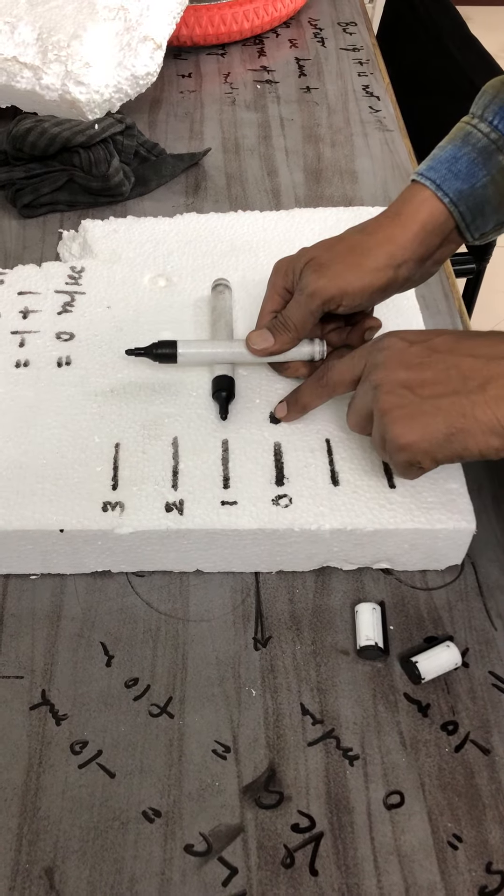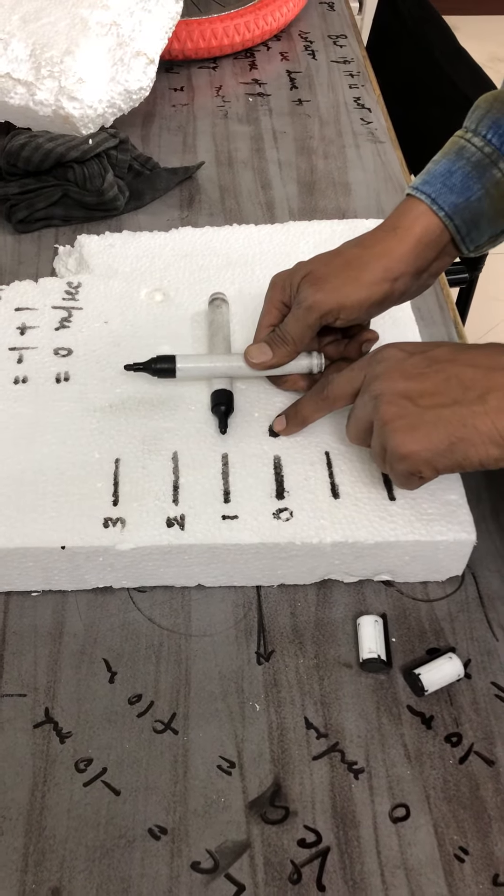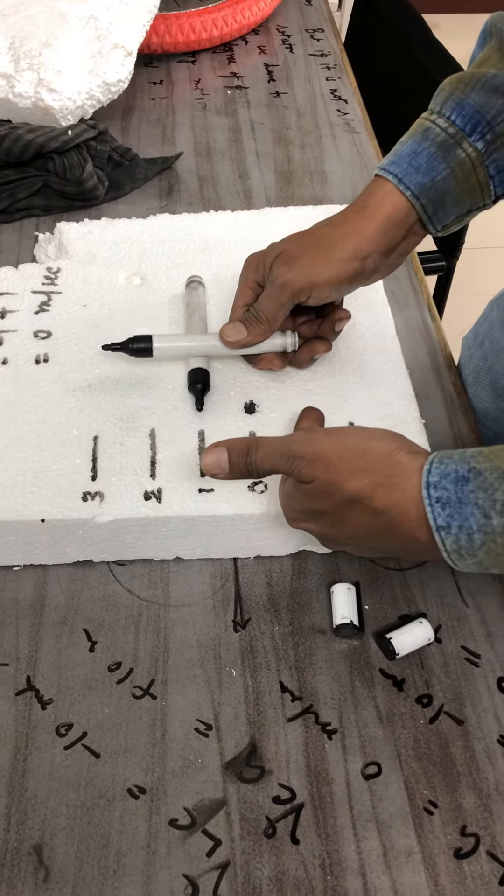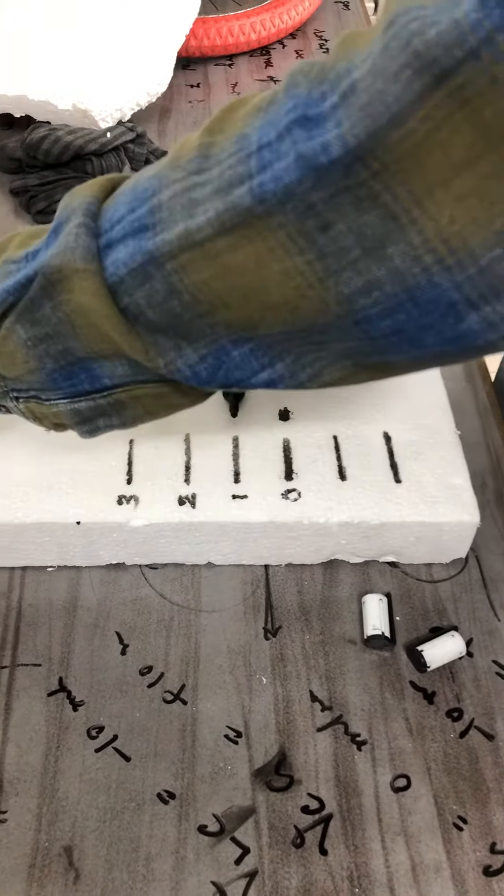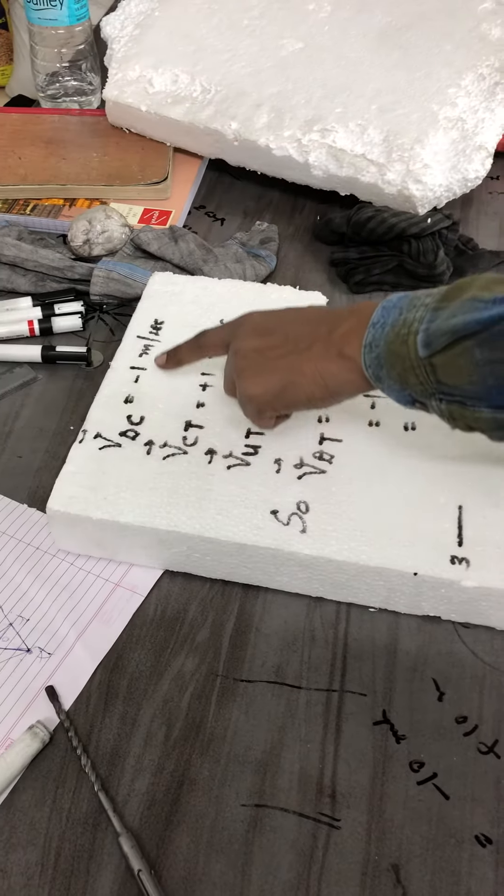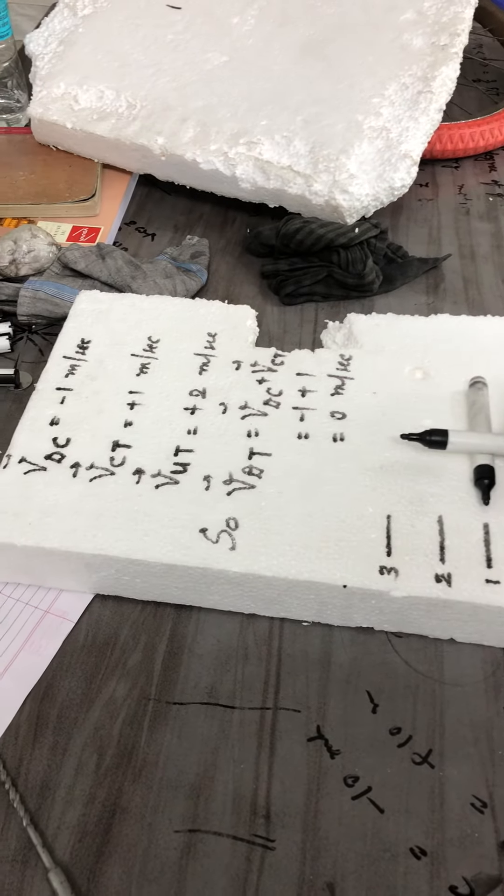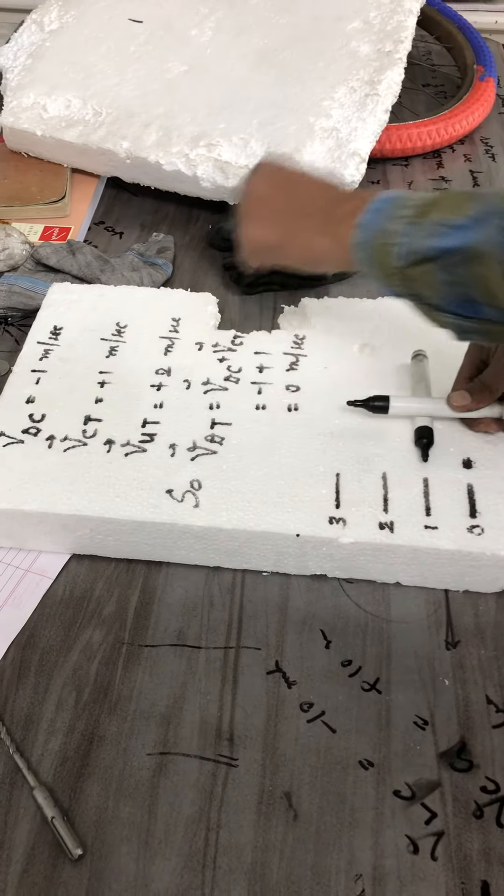But this tip, the downmost particle, velocity of downmost particle with respect to center of mass is minus 1 meter per second, whereas velocity of center of mass with respect to thermocol is plus 1 meter per second.